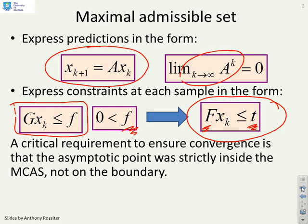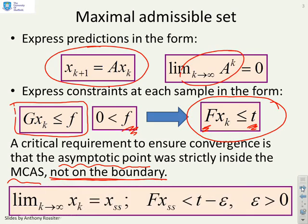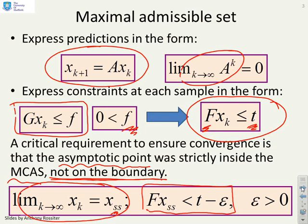A critical requirement to ensure convergence is that the asymptotic point, that is where the state tends to asymptotically, is strictly inside the MCAS and not on the boundary. If it's on the boundary, the algorithm might not converge. Therefore we need the limit as k goes to infinity of x(k), which gives x_s, the steady state. Put the steady state into your MCAS, then we want f*x_s strictly less than t minus epsilon, where epsilon is some small positive number.